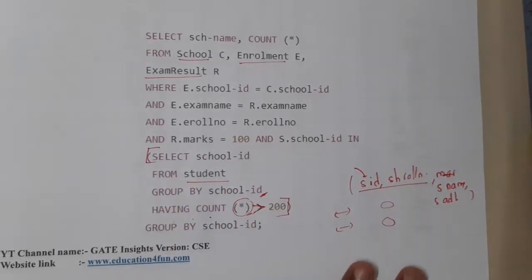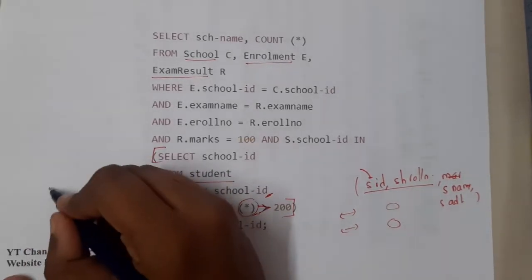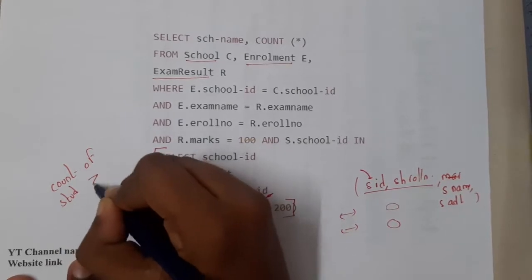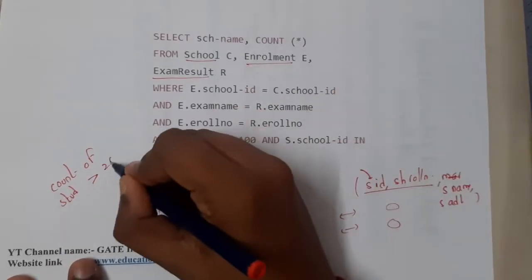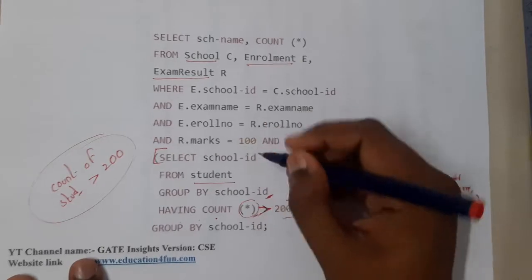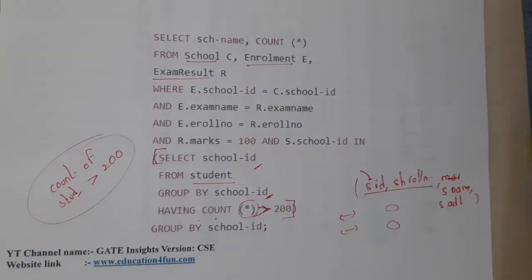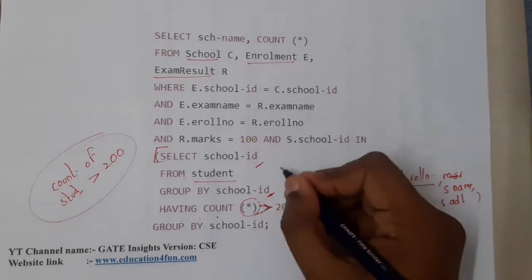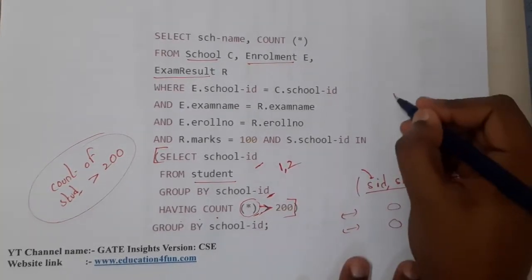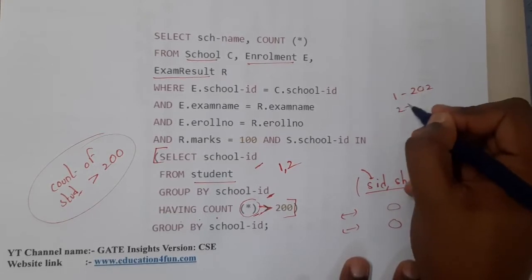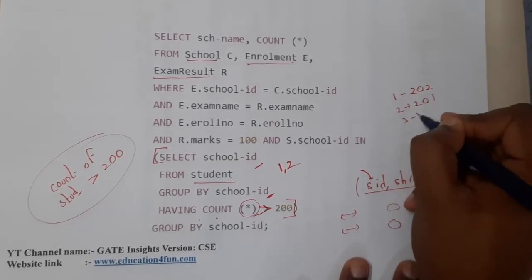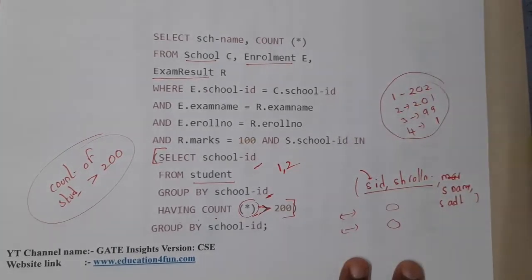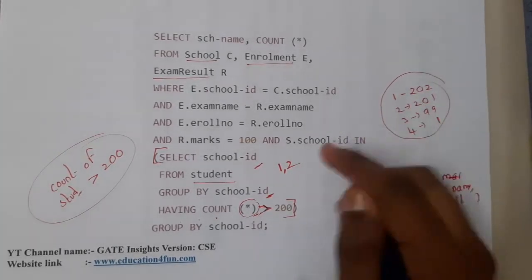Once this inner query is done, what we get as output is the school IDs where the student count is greater than 200. For example, assume school IDs 1 and 2 have more than 200 students each, school 3 has 99 students, and school 4 has only 1. So schools 1 and 2 are returned.